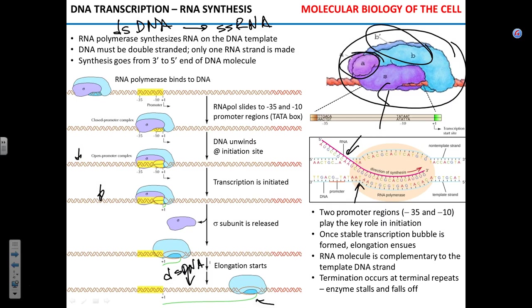Can we just use one strand and get rid of the other? It turns out no — for transcription you must have double-stranded DNA. The enzyme RNA polymerase will bind and sit on double-stranded DNA only. If you had an artificial single-stranded DNA, transcription could not proceed because the polymerase requires the double-stranded form.